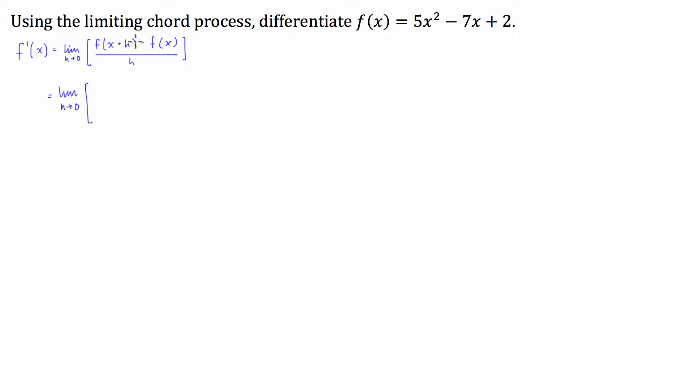So the limit as h approaches 0. Now we have to have f of x plus h. So the way we get that from this is we just replace the x's in this function by x plus h's. So we're going to have 5 times x plus h all squared minus 7 times x plus h plus 2.